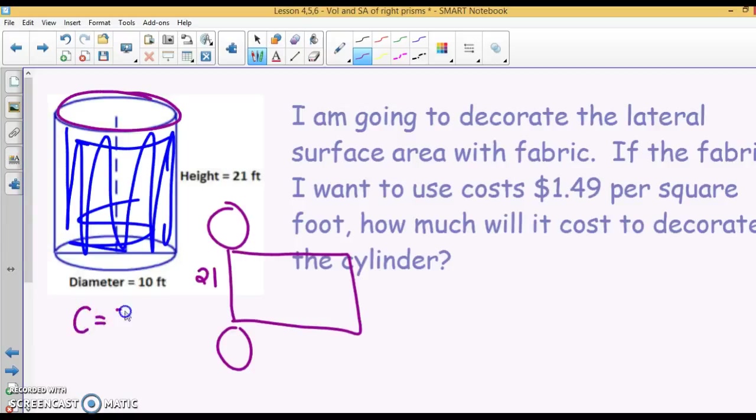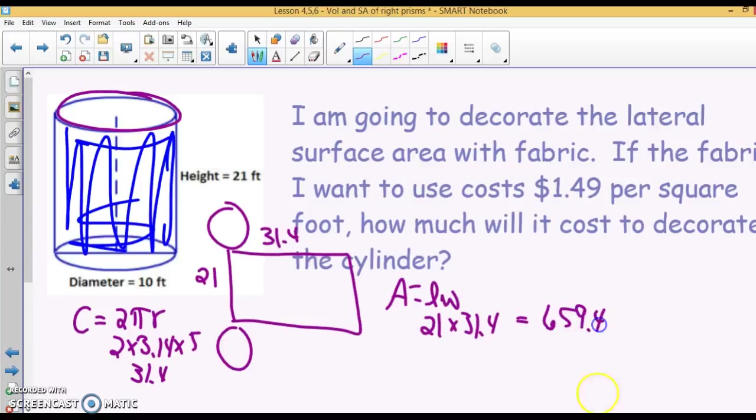Circumference is 2 pi r. If I find the circumference of this circle, 2 times 3.14 times the radius is 5, gives me 31.4. So this is 31.4. The area there, length times the width, is 21 times 31.4. And I get 659.4 square feet, and they told us that the fabric that I want to use is $1.49 per square foot, so I'm going to multiply by $1.49. And I end up with $982.61.